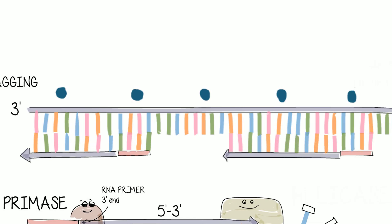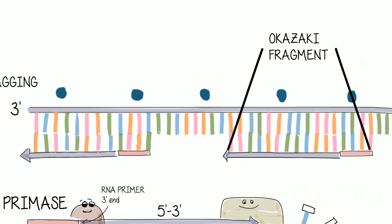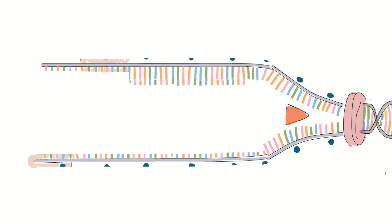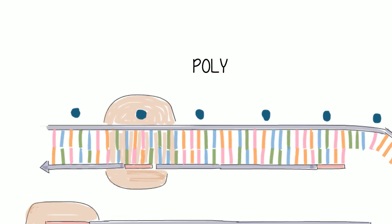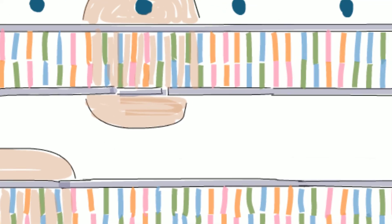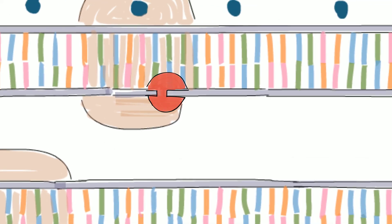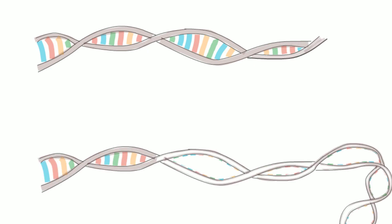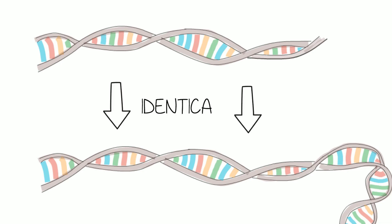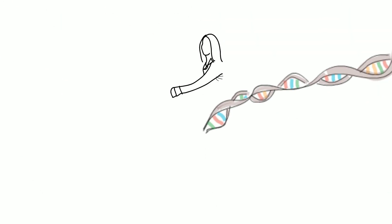The cleanup crew is just as important. RNA primers are removed by exonuclease enzymes, and the gaps in the sequence are filled in by DNA polymerase I. On the lagging strand, the rifts between successive Okazaki fragments are sealed by DNA ligase. This complex system of enzymes and proteins yields two identical double-stranded copies of DNA, and this is how DNA replication is the foundation of biological inheritance.